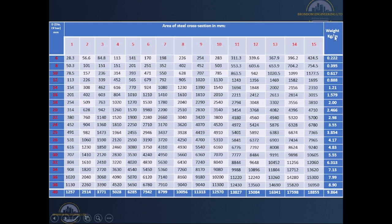We also have a table showing the weight of steel bars per meter length. For example, 16 mm steel bars have a weight of 1.58 kilograms per meter length and 8 mm bars have a weight of 0.395 kilograms per meter length, and so on. We have also done a video on how to determine the weight of steel bars per unit length using the formula D²L / 162. Kindly subscribe to this channel and check out our videos where we have derived this formula.